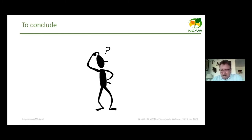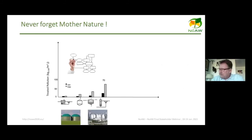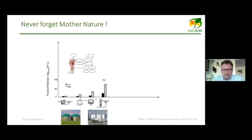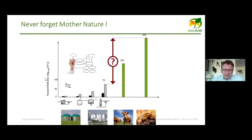To conclude: never forget mother nature. Looking at anaerobic digestion technologies versus their performance in terms of organic loading rate, engineered digesters can reach up to 70 kg COD per cubic meter per day for highly biodegradable substrates, or 5–10 for solid slowly biodegradable ones. But in nature, a cow achieves around 200 kg COD per cubic meter per day as a reactor, and the termite reaches 400.